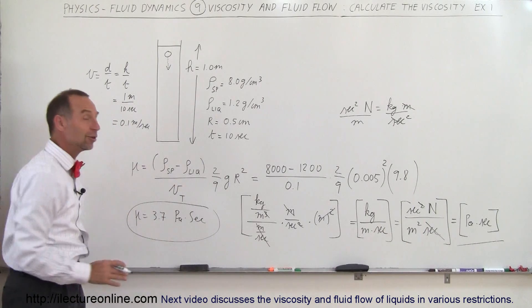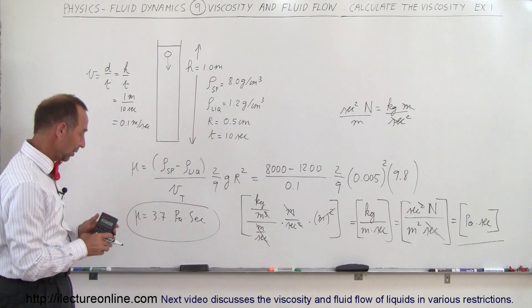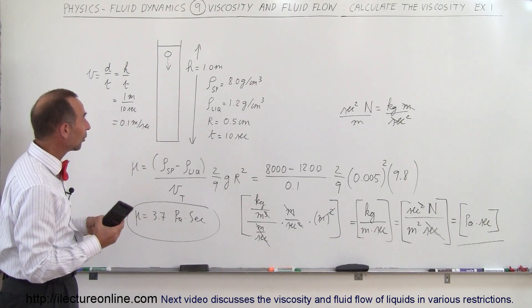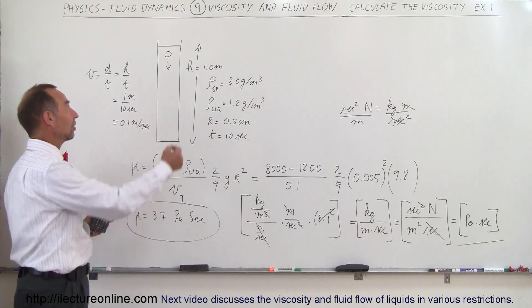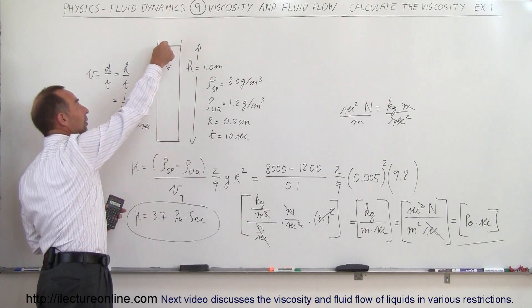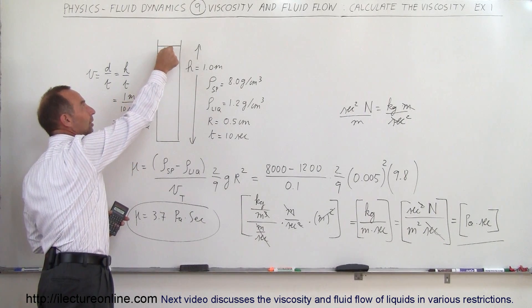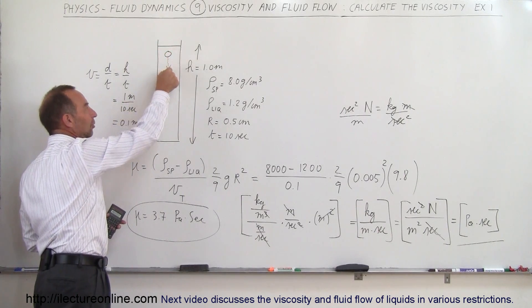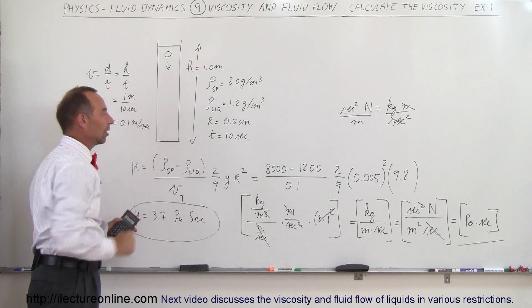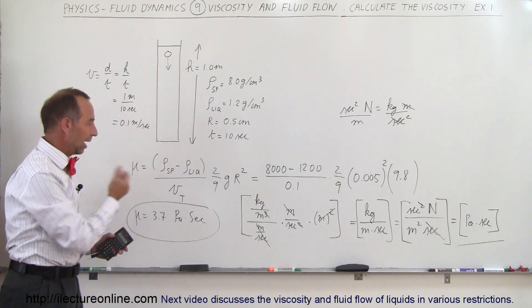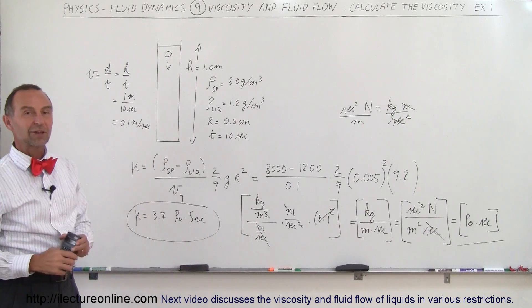Pascals times seconds is indeed the correct unit for viscosity. So numerically we got the correct answer and we verified that the units are indeed Pascal-seconds. That's how we can measure, in the classroom or laboratory, the viscosity of a liquid — just take a small sphere, drop it in, it quickly reaches terminal velocity, measure the time and distance it falls, plug the numbers into the equation, and that's how we measure the viscosity.